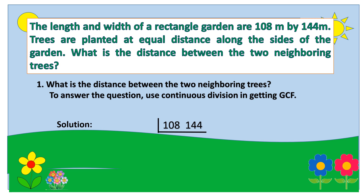We will use continuous division or inverted division. Think of a number that is divisible by both 108 and 144, and that is 2. Then divide: 108 divided by 2 equals 54. Then again, think of a number that is divisible by 54 and 72, and that is 2. Then divide: 54 divided by 2 equals 27, and 72 divided by 2 equals 36.